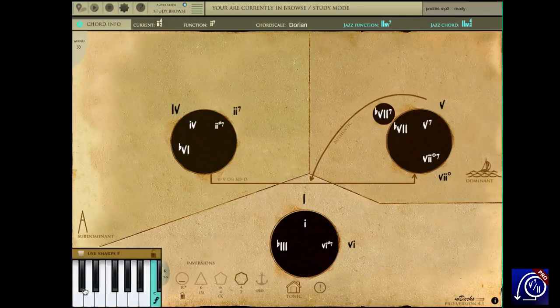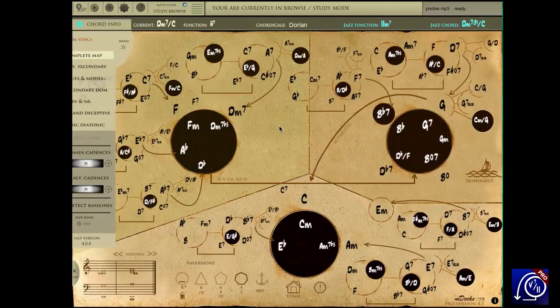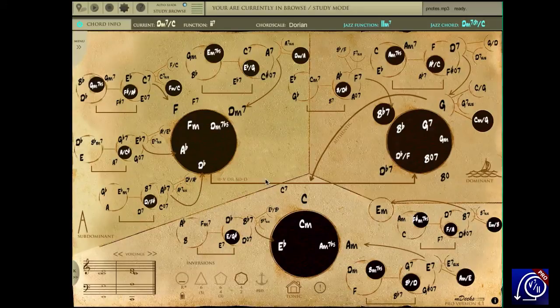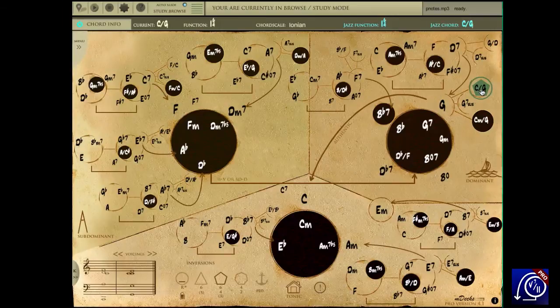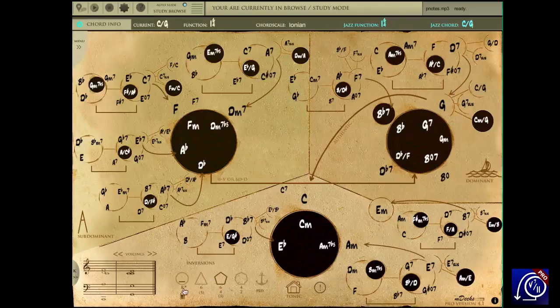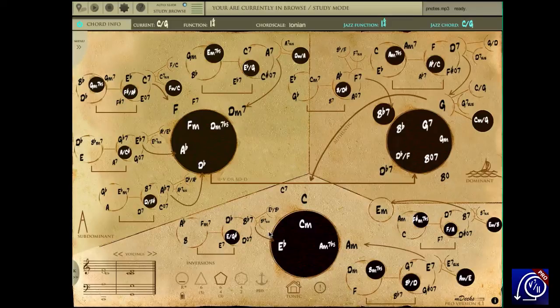There are a couple of chords that will not allow inversions since their function is dependent on the inversion they are in. Here's the cadential 1, 6, 4. I will select root position and now tap on the C over G. The inversion has automatically changed to second inversion since this chord will only function as a cadential 6, 4. Although no other inversions are allowed in these functions, they of course accept any pedal point.